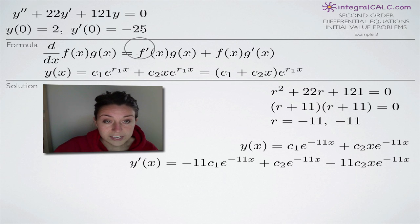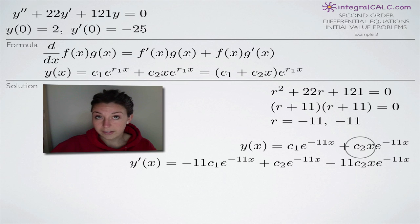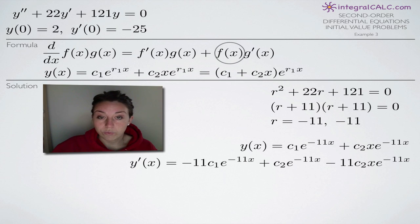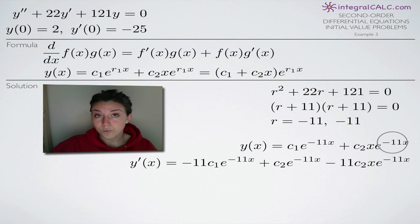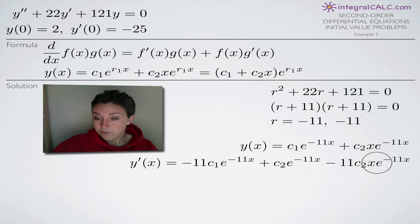Product rule tells us to take the derivative of f(x) = c₂·x, which is just c₂ — the same as the derivative of 3x being 3 — and leave g(x) = e^(−11x) as is. Then for the f(x)·g'(x) part, we leave c₂·x alone and take the derivative of e^(−11x), which gives −11e^(−11x). So the negative 11 comes out in front and we leave e^(−11x). That's how we apply the product rule to this term.